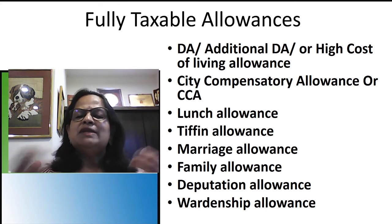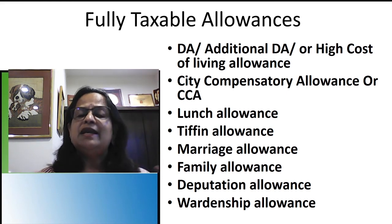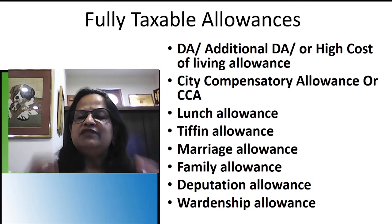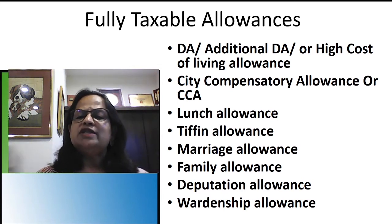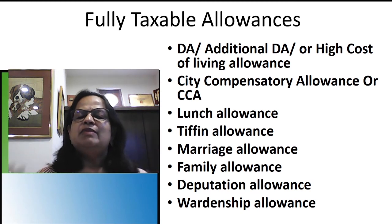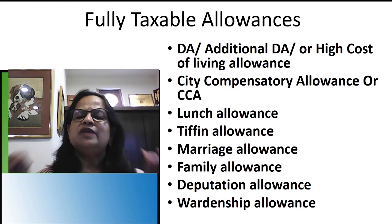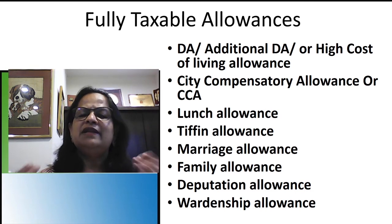Lunch allowance — if you receive a fixed amount for lunch, it is completely taxable. Tiffin allowance, which covers snacks or tea in between, is also fully taxable if given as a fixed amount. Marriage allowance — given by companies to employees on the occasion of marriage — is fully taxable. Family allowance is given when an employee has a child, an additional member in the family, and is also fully taxable.